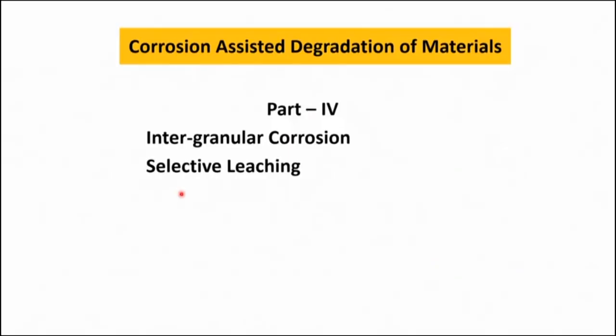Hello, we are in the process of discussions on different modes of corrosion, particularly wet corrosion or aqueous corrosion. Today in this talk we will discuss about two different modes which are very much dependent on the microstructure of metals and alloys. These are intergranular corrosion and selective leaching.